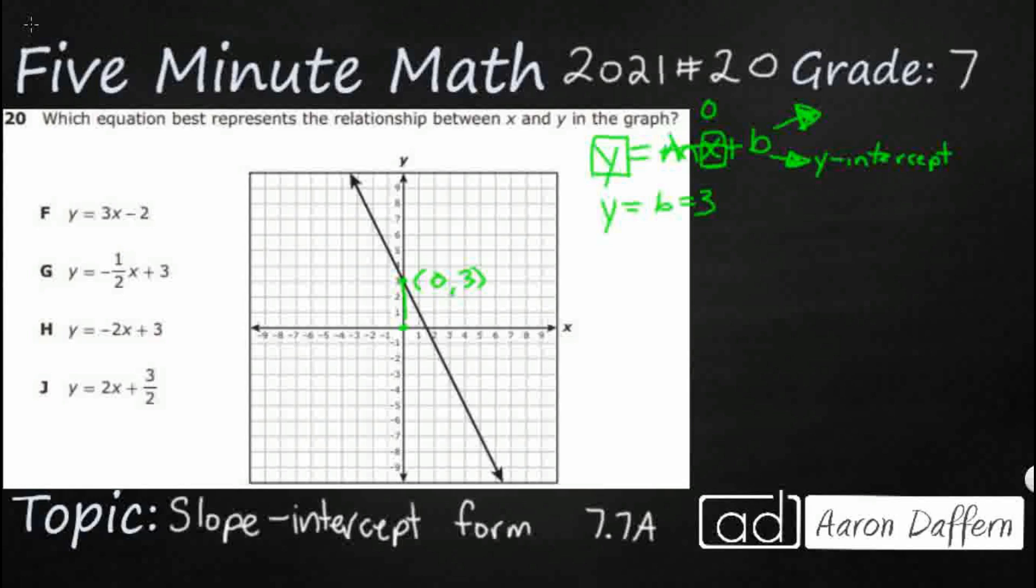So now I know what my y-intercept is. My y-intercept is three, and it's a positive three. If it were negative, we would just do minus three. But now our equation so far is going to be y equals mx plus three, because when x is zero, y equals three.